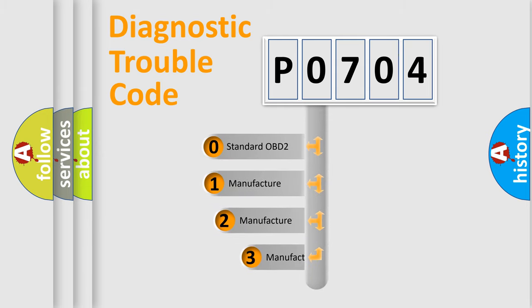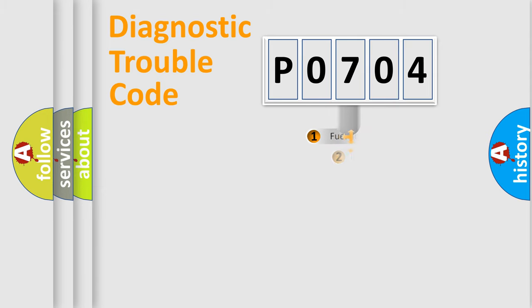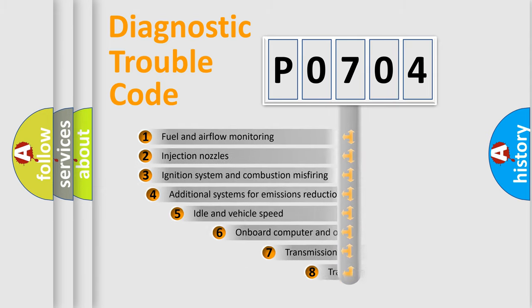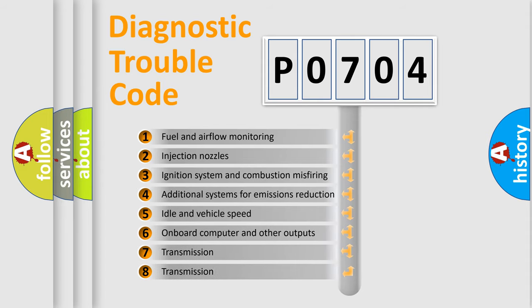If the second character is expressed as zero, it is a standardized error. In the case of numbers 1, 2, or 3, it is a more manufacturer-specific expression of the car-specific error. The third character specifies a subset of errors.